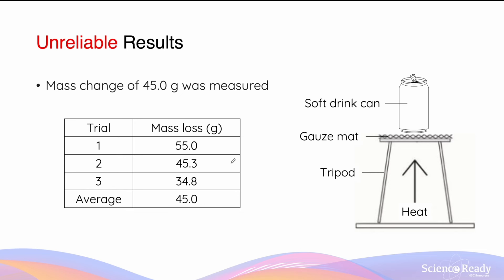So these results are considered reliable. Now let's look at a separate set of results from the same experiment. For some reason I've arrived at three different values: 55.0, 45.3, and 34.8. In this instance, even though the average value is exactly the same — 45.0 grams — if you look at each of the three values used to calculate the average, they are much further deviated from the average and far more inconsistent. This set of results is an example of unreliable results.